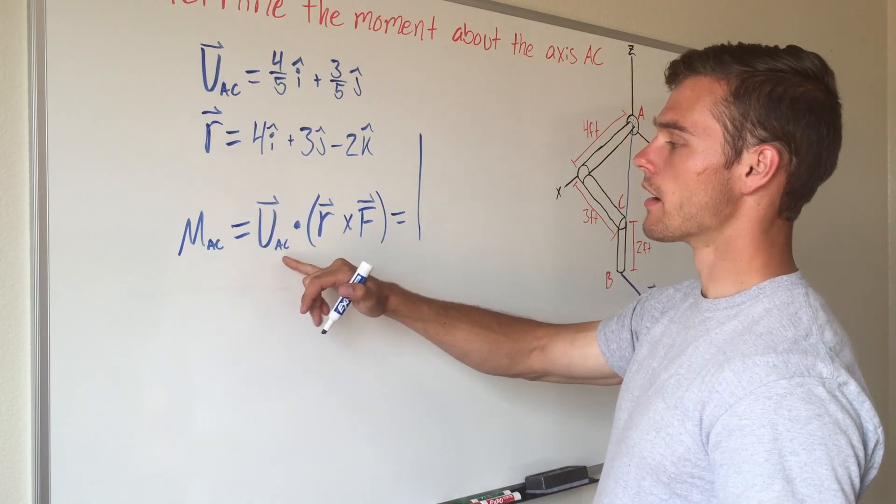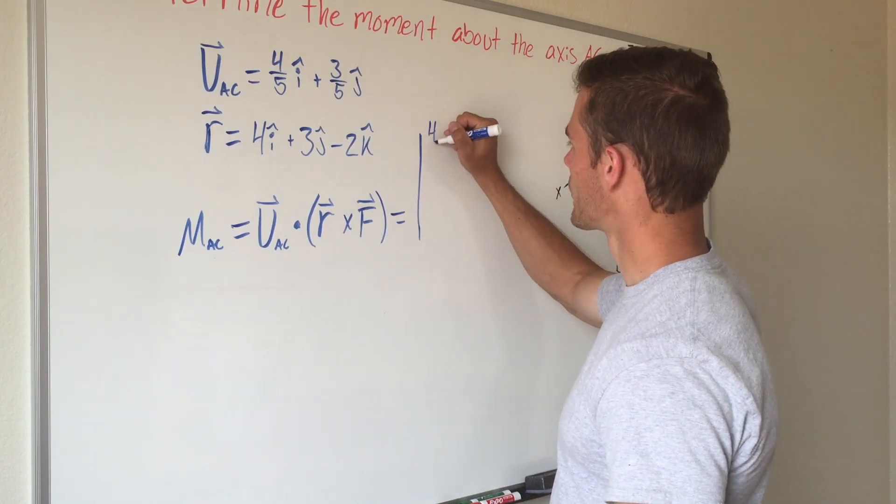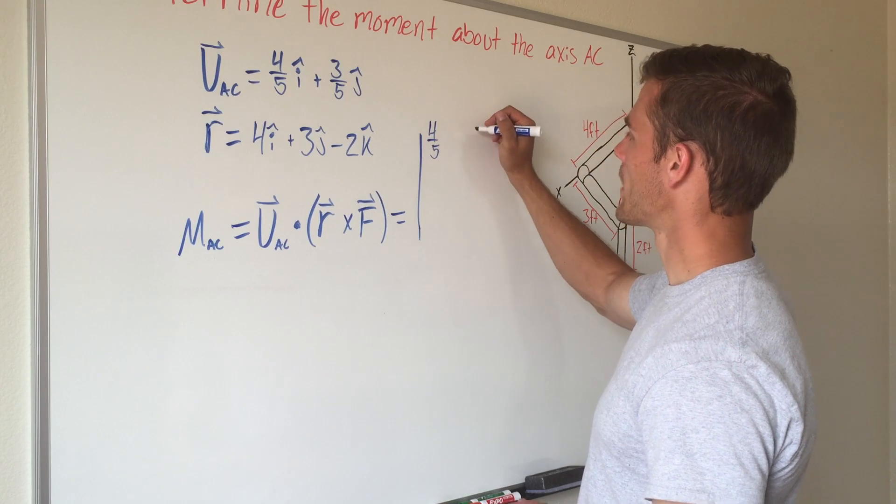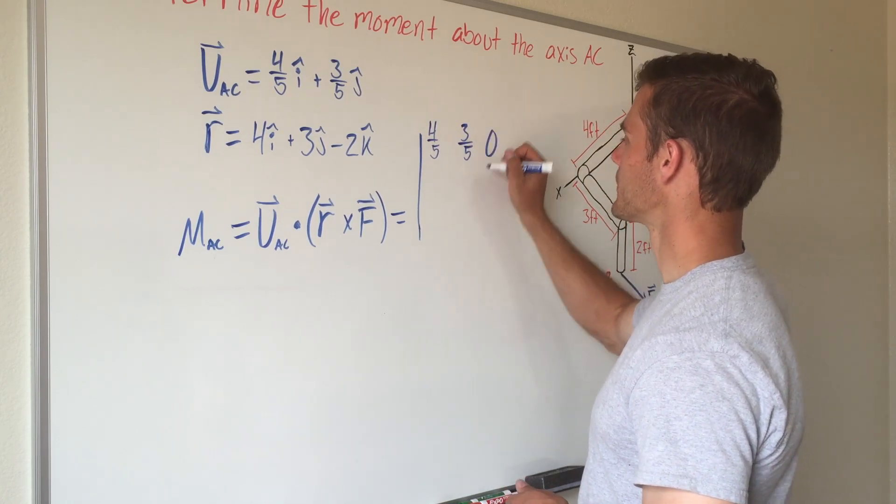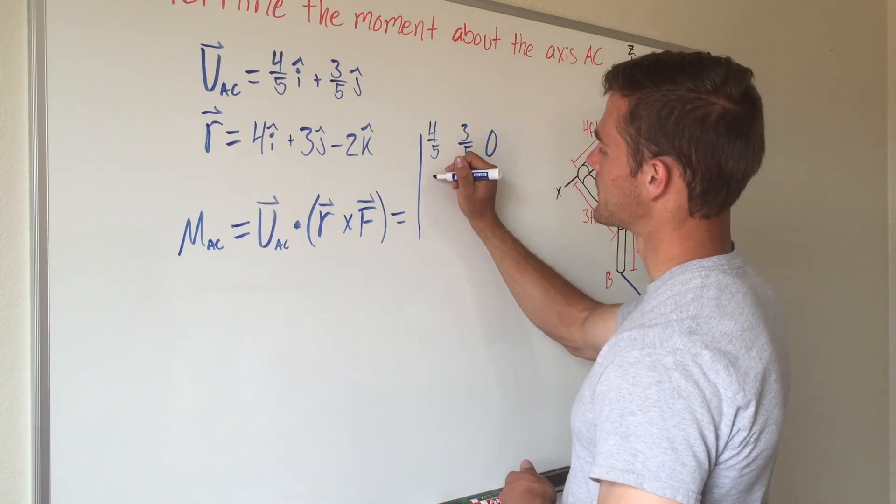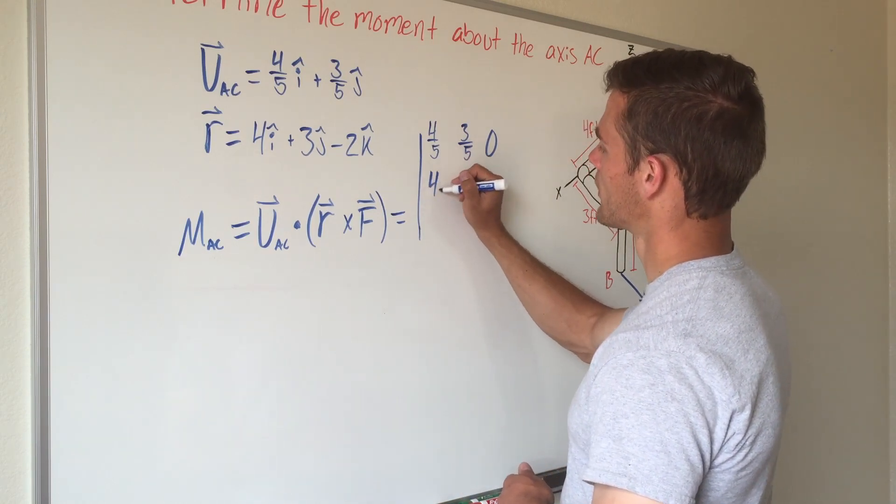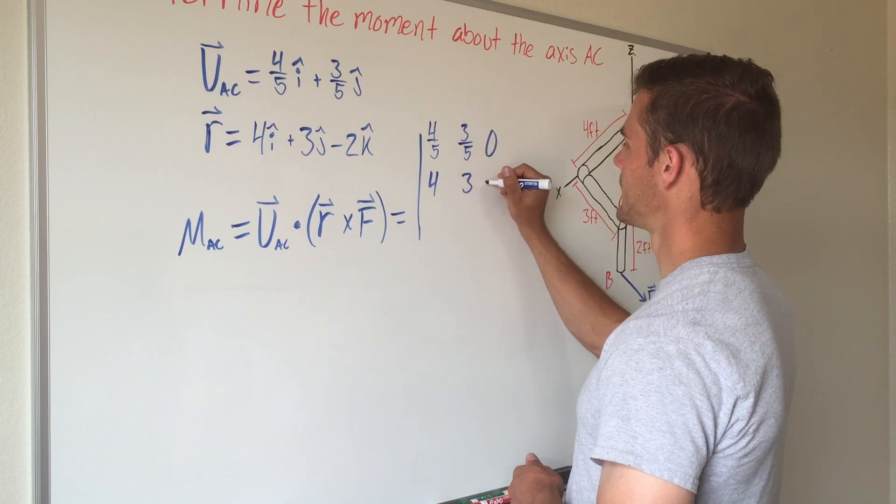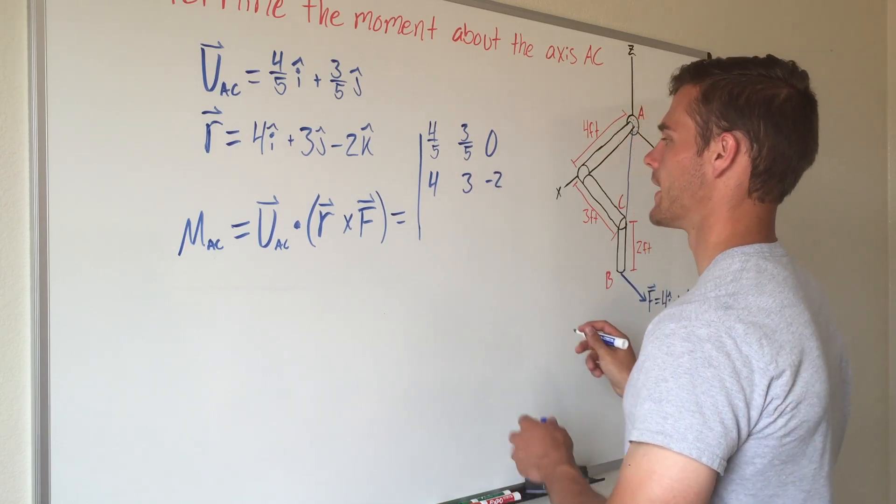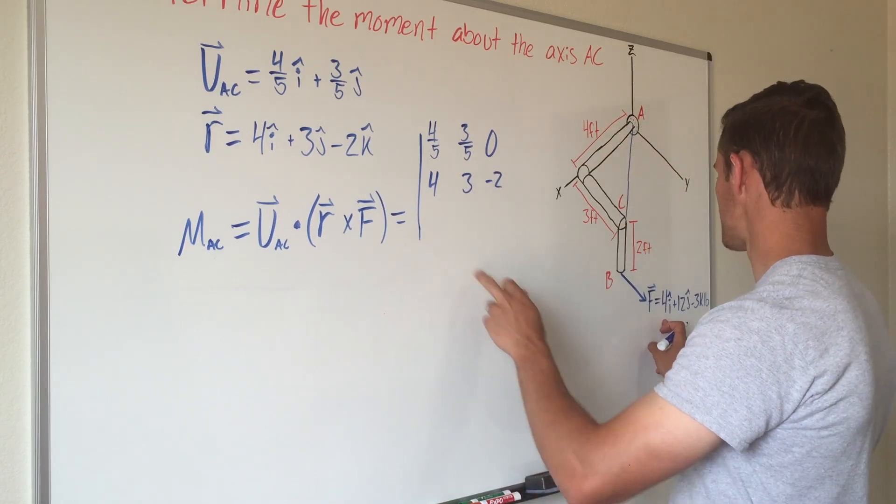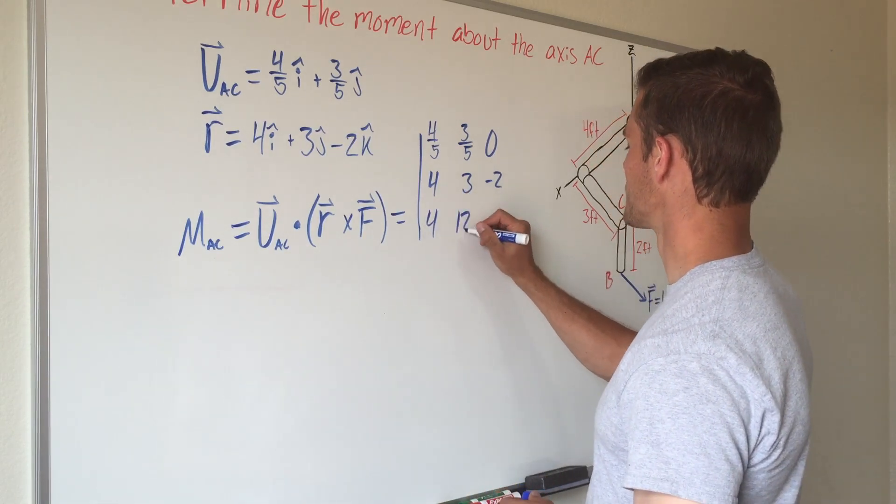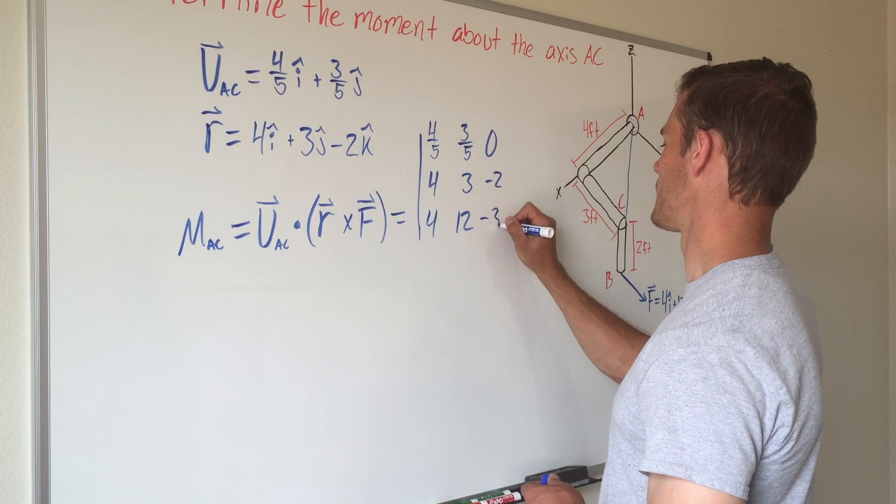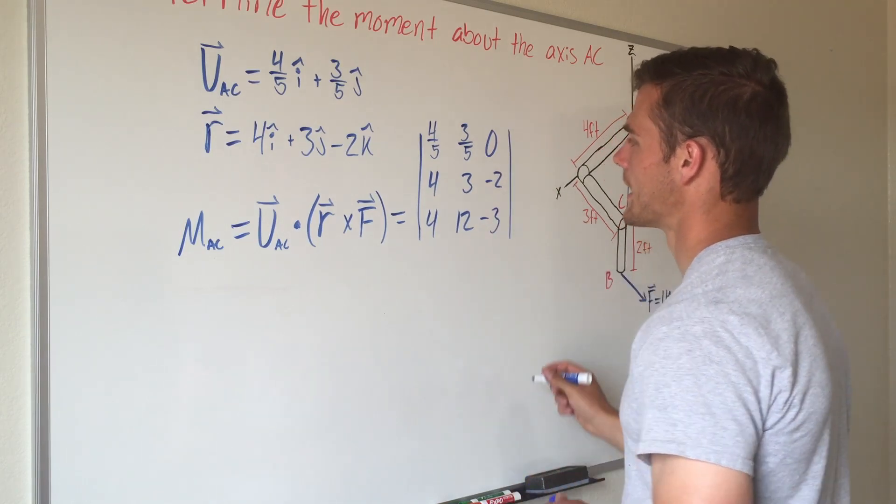So we're going to have our x component of our unit vector which is 4 fifths, our y component which is 3 fifths, and our z component which is 0. Then our x component of our moment arm which is 4, then 3, then negative 2. Then our x component of our force which is 4, our y component which is 12, and then our z component which is negative 3.